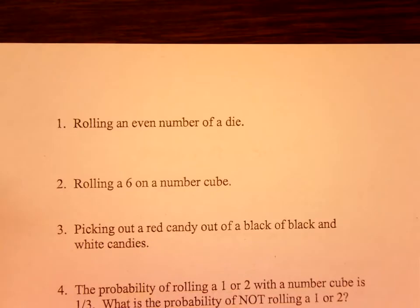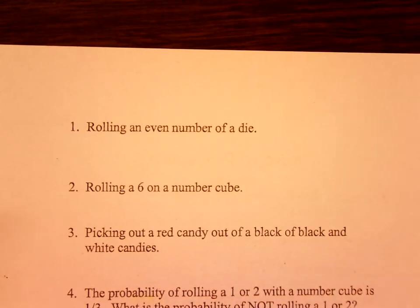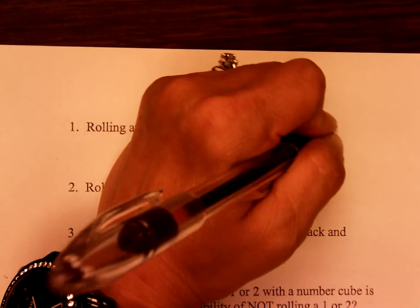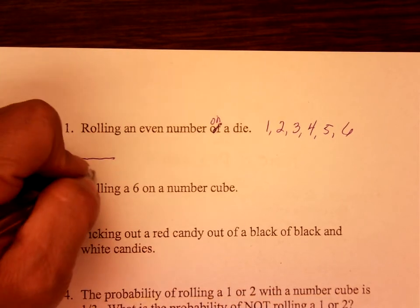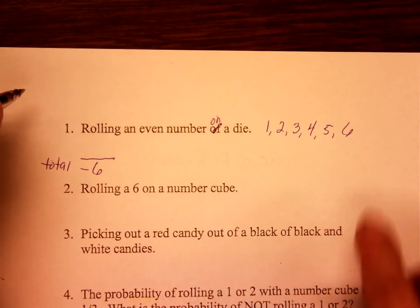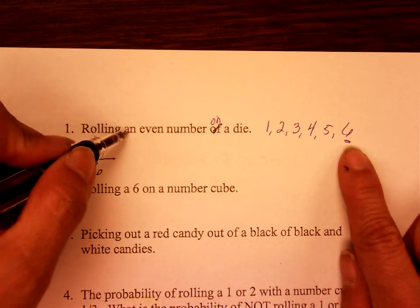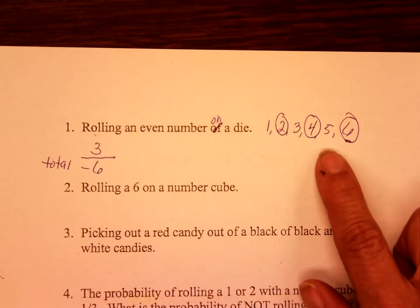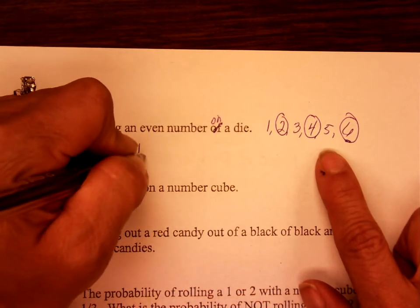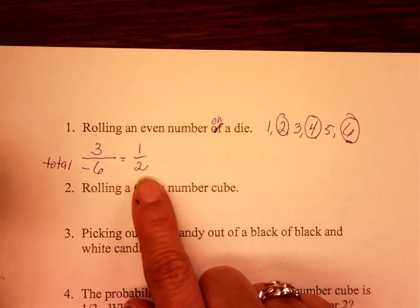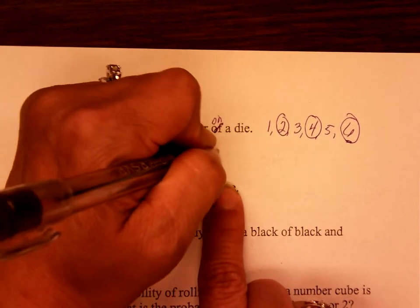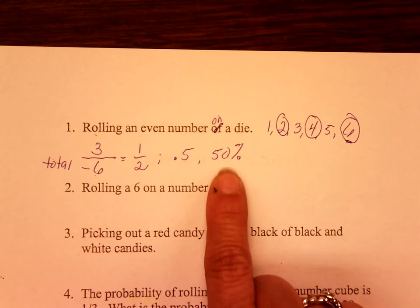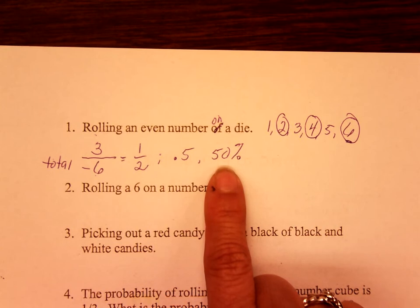Example one: rolling an even number on a die. List all the numbers on a die: 1, 2, 3, 4, 5, and 6. The total number on a die is 6, which is always your denominator. Circle all the even numbers — you should have circled three numbers. So 3 over 6 is your ratio, which reduces to one-half. Convert to decimal: 0.5, and percent: 50%. At 50%, this is equally likely.